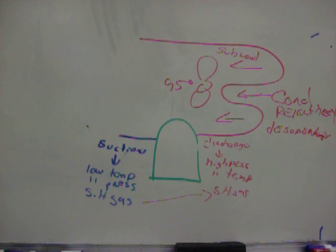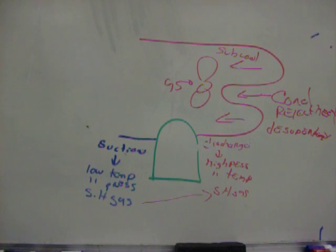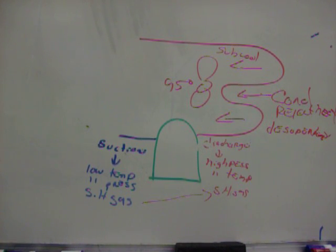De-superheating at atmospheric pressure would be removing any heat from steam above 212 degrees. Water boils at 212. So you pull all the heat down, and at 212 you start to condense. And if you pull the temperature from that water down from 212 to 202, then you did 10 degrees of sub-cooling.